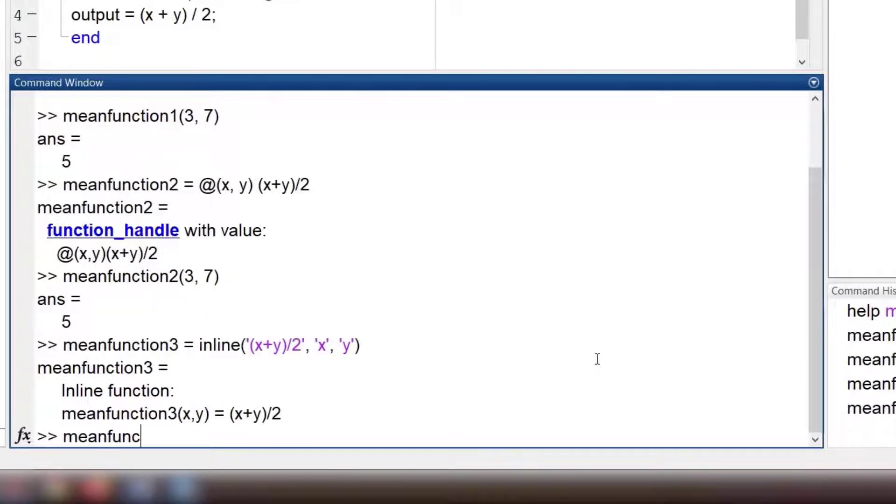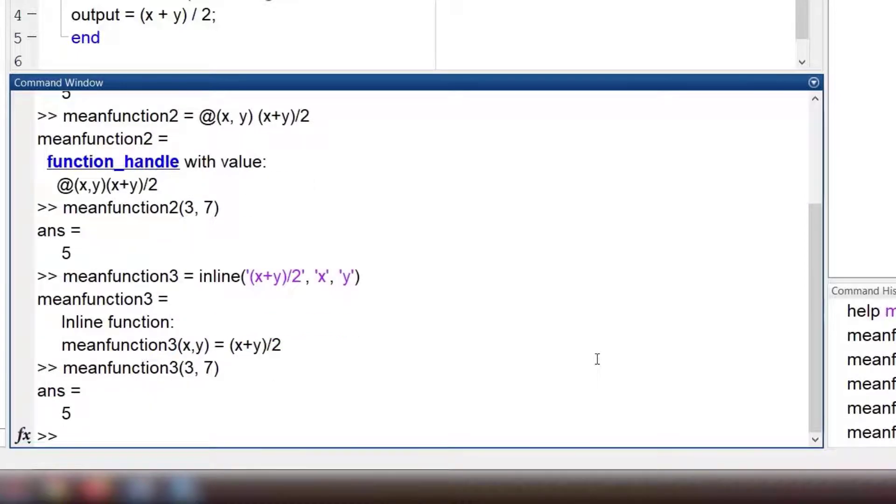One limitation of using inline command and anonymous functions is that they can only return one value as their output.